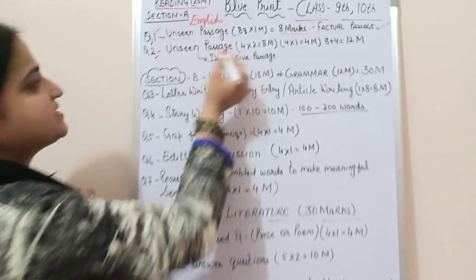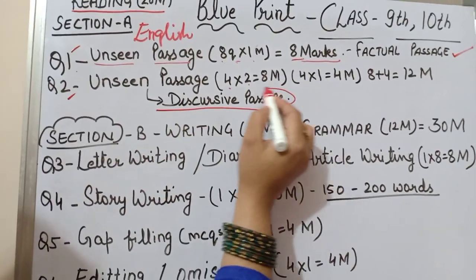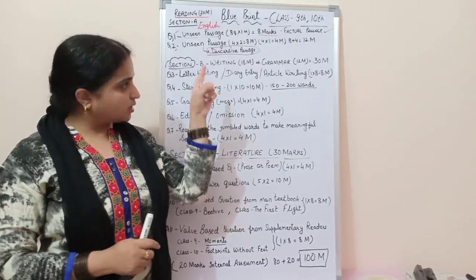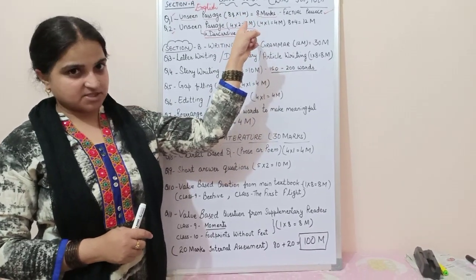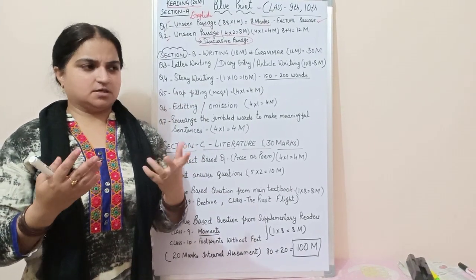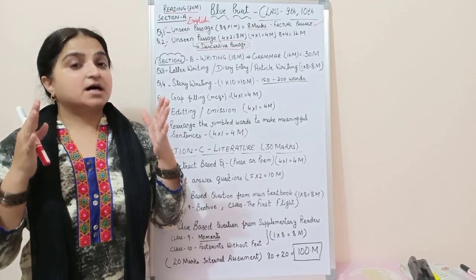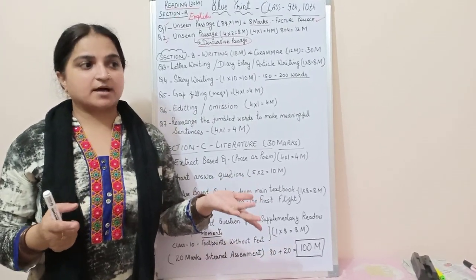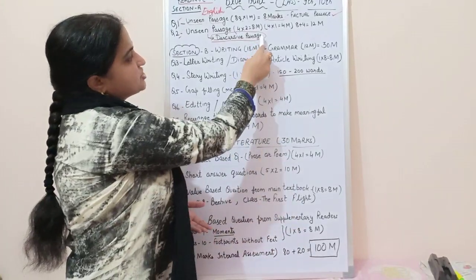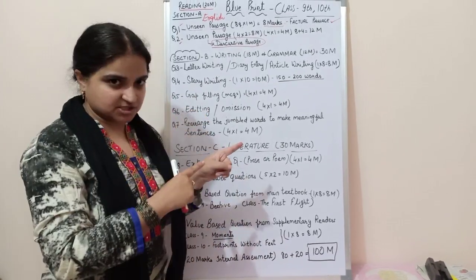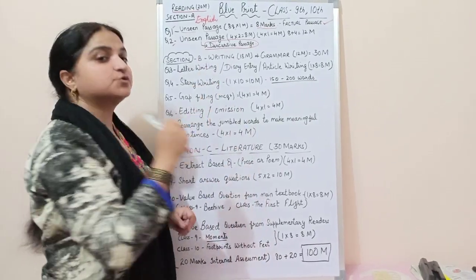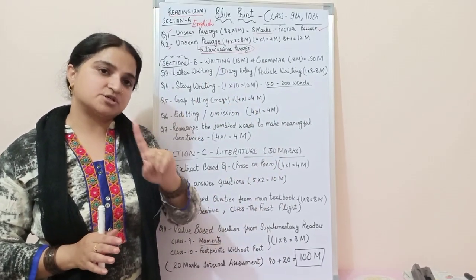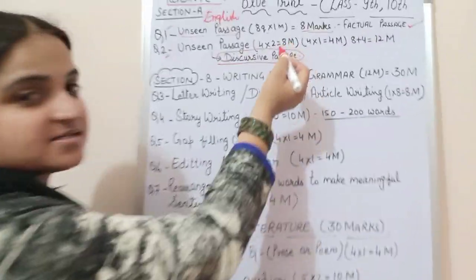Question number two is also an unseen passage, but this one is a discursive passage. A discursive passage has a longer word limit than question number one. A problem or an issue is discussed in this passage, and the answers you give are thinking-based and rational. Students who have attempted PISA-based exams will find PISA-based questions here as well. You need to think while answering. There are four questions of two marks each in this passage.